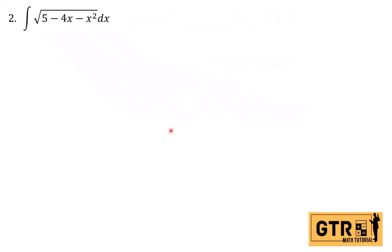As you can see in the example, we have the square root of 5 minus 4x minus x squared, dx. The possible solution for this is trigonometric substitution, because we can transform the expression under the square root into the form a squared minus u squared, and then use the substitution u equals a sine theta.